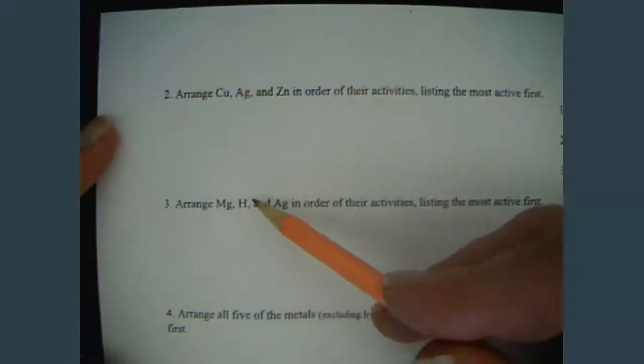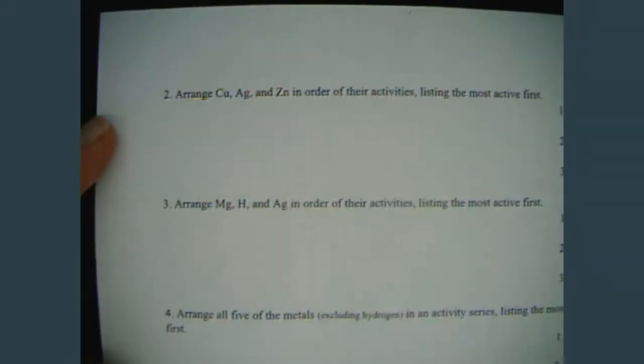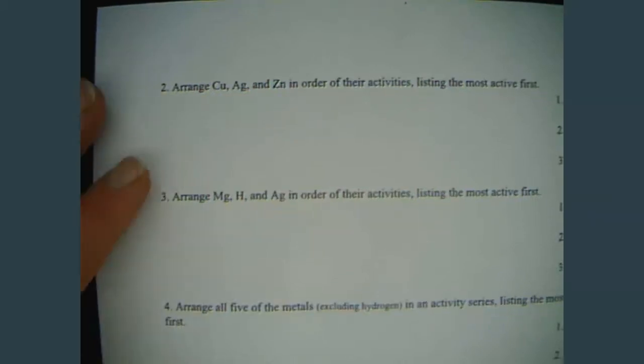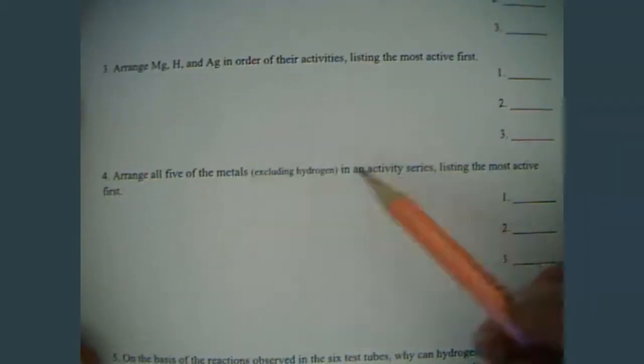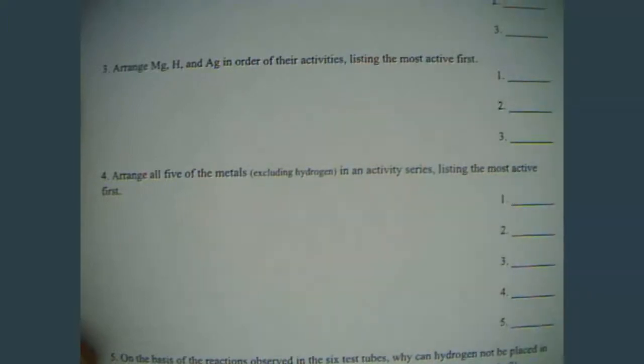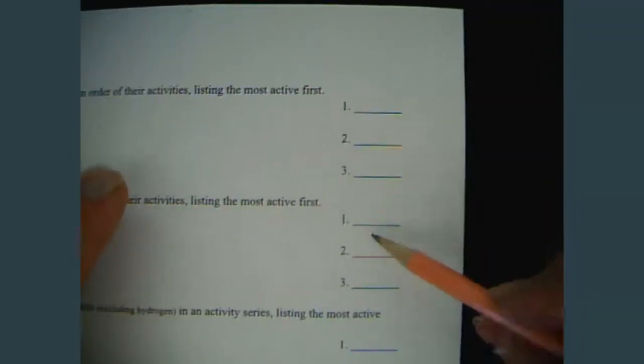And then, magnesium, hydrogen, and silver. Again, we're ignoring the anions, the second half of the compounds that are aqueous, because we're just trying to compare the metals and hydrogen. And then, we're going to arrange all 5 of the metals, excluding hydrogen, in an activity series listing the most active first. So, using your table from here, here, and here, you put the 5 metals.